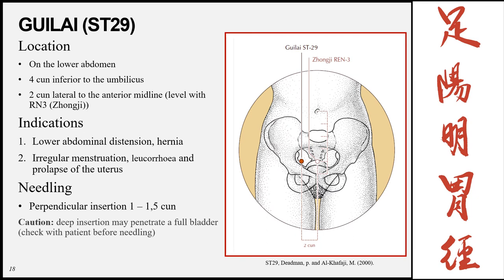Guilai, Stomach 29, is on the lower abdomen, 4 cun inferior to the umbilicus and 2 cun lateral to the midline. Indications include lower abdominal distension, hernias, irregular menstruation, leukorrhea, and prolapse of the uterus. Insertion is perpendicular, 1 to 1.5 cun, with the same caution against deep insertions in patients with a full bladder.